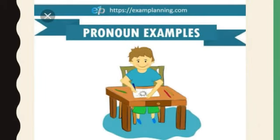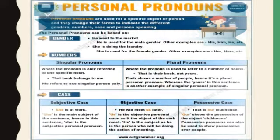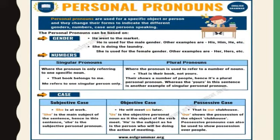Hope you all have enjoyed the song. Now let us have a glance at personal pronouns with examples. Personal pronouns are used for a specific object or person, and they change their forms to indicate the different gender, number, case, and person speaking. Now let us see personal pronouns based on gender.